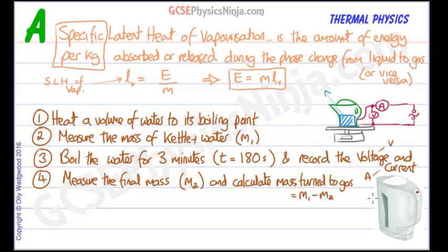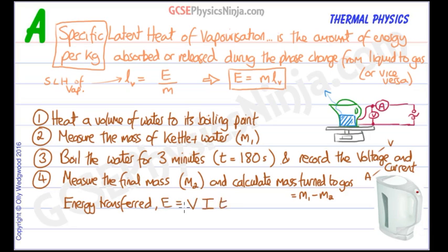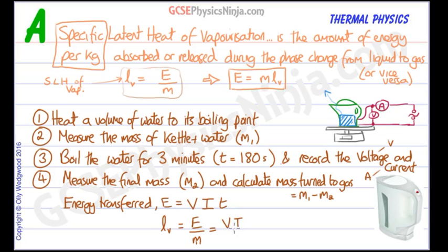If asked about equations: the energy transferred by the kettle, E, can be found by multiplying voltage times current times time — E = VIt. Once you have the energy transferred, use Lv = E/M, where M is the mass of water turned into gas. So the full expression is Lv = (V × I × t) / (M1 − M2).